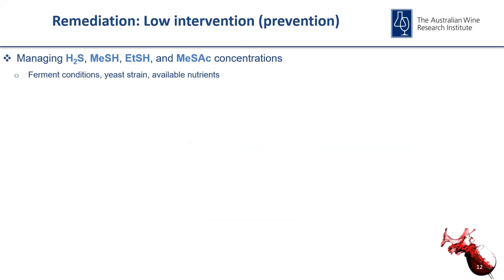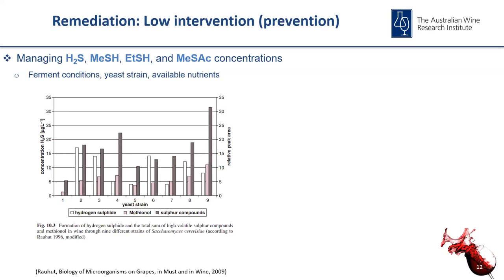Our low intervention or prevention techniques are very effective against managing H2S, methane thiol, ethan thiol, and methyl thioacetate. These are all things you've learned in becoming winemakers. Fermentation conditions are very important, yeast strain is critical, and available nutrients are super important. We know yeast strains react very differently in their ability to produce H2S. Here in this graph we can see the ability of nine different yeast strains to produce H2S — some produce no H2S (the white bars), others produce quite large amounts, and some are medium producers.